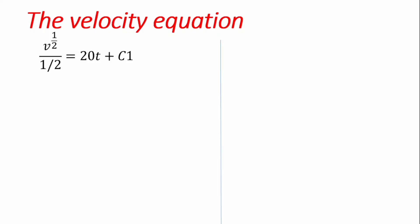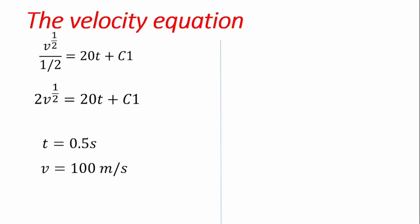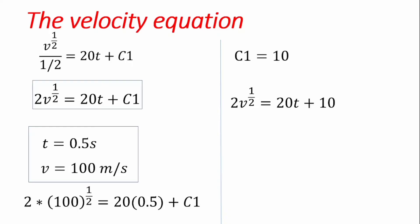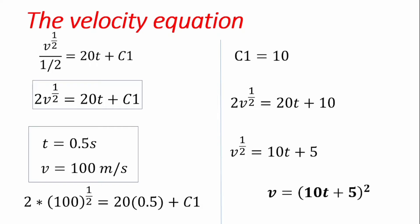Simplifying, we get 2v raised to the power one-half equals 20t plus c. Now, using the given conditions — t equals 0.5 seconds and v equals 100 meters per second — we substitute into the equation to find c1 equals 10. Substituting c1 back gives 2v to the half equals 20t plus 10, which simplifies to v to the half equals 10t plus 5. Squaring both sides, our velocity equation is v equals (10t plus 5) squared.